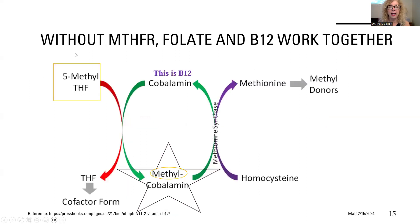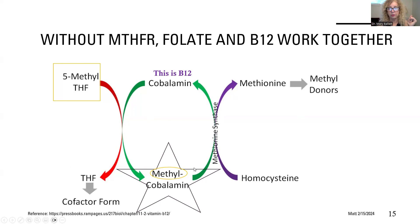So without MTHFR: folic acid as methyl tetrahydrofolate gives just plain cobalamin its methyl group. This becomes tetrahydrofolate, which can go on to become the other forms of folic acid like formyl tetrahydrofolate and N5N10 methylene tetrahydrofolate. Cobalamin then becomes methyl cobalamin. To convert homocysteine to methionine, you need the enzyme methionine synthase — it uses only methyl cobalamin, not methyl tetrahydrofolate, and not together. They can't both have the methyl group — that's not how the game is played.